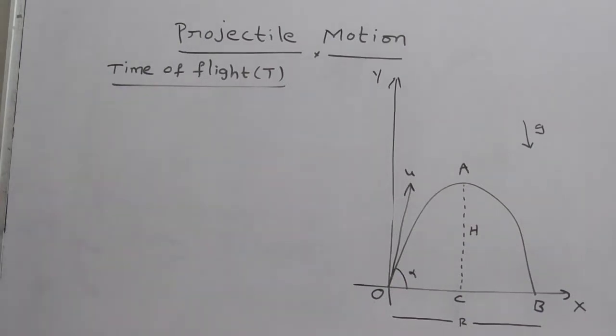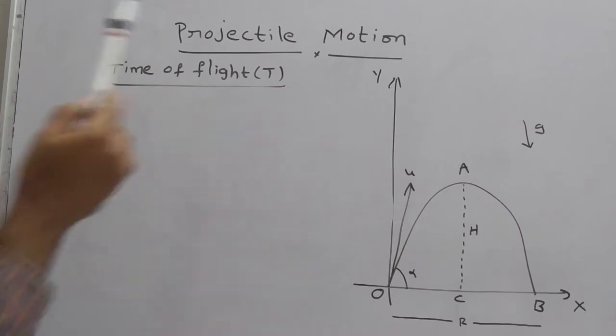Here we are going to derive a very useful formula, the time of flight T. So what is time of flight T? The total time taken by the particle in the path OAB. Here the x-axis is along the horizontal direction, and the y-axis is along vertically upwards.